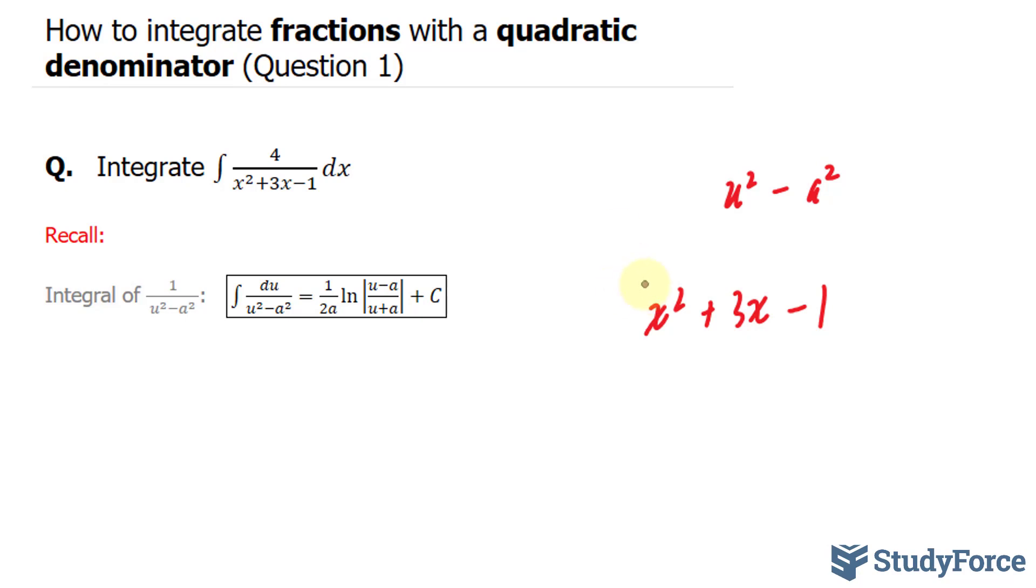What you do is you place brackets around the first two terms of your standard form quadratic equation. Notice that our x to the power of 2 term does not have a leading coefficient, so that's a good thing. If it did, you'd have to factor it out from the first two terms.